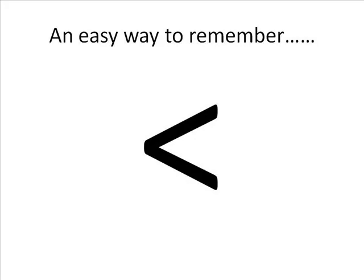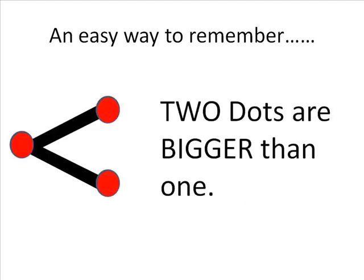If we place one dot at the point of our symbol, and then two dots at the other end, we can use a technique where we say that two dots are bigger than one, and the two dots need to go towards the number which is the largest.